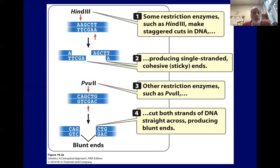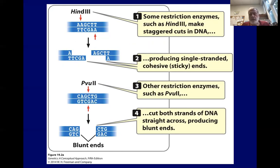The enzyme HindIII, with the recognition site A-A-G-C-T-T, cuts between the A's and produces overhangs or sticky ends. If we mix them with another DNA molecule cut with HindIII, they naturally anneal and we can close them up with DNA ligase. The enzyme PvuII cuts in the middle of its recognition sequence, producing blunt ends, and you really can't attach anything to blunt ends — something needs to be overhanging or sticky.